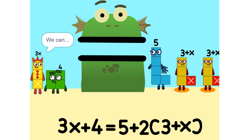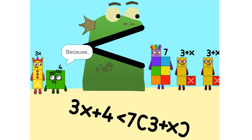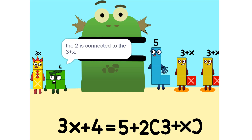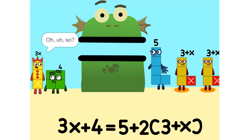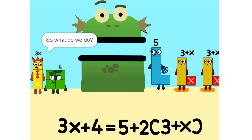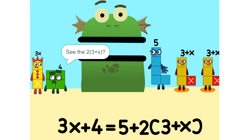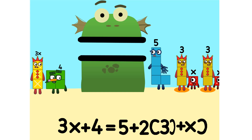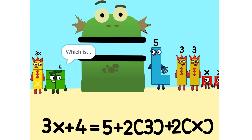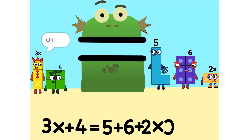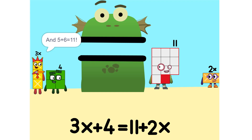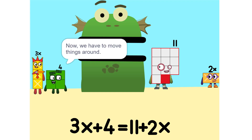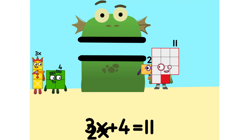I see something. We can add these. Why did that happen? Because the 2 is connected to the 3 plus X. So it's like adding apples and oranges. You can't. So what do we do? See the 2 times 3 plus X? That's the same as 2 times 3 plus 2 times X, which is 6 plus 2X. And 5 plus 6 is 11. Now we have to move things around. We have to move this 2X to this side. So 5X.